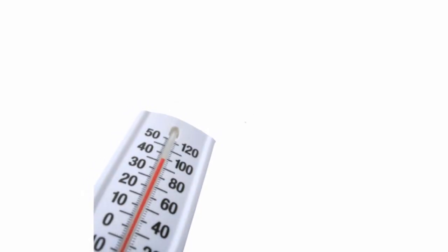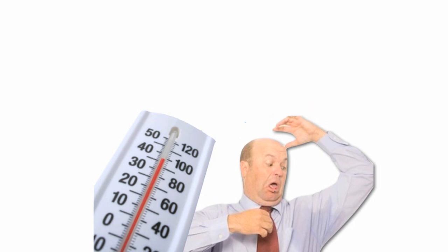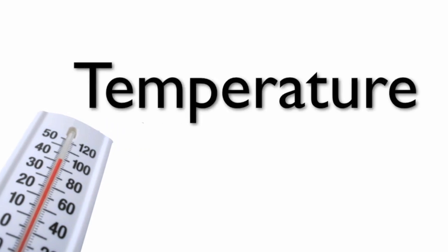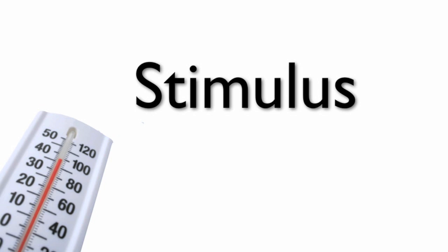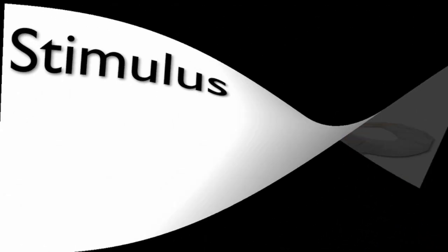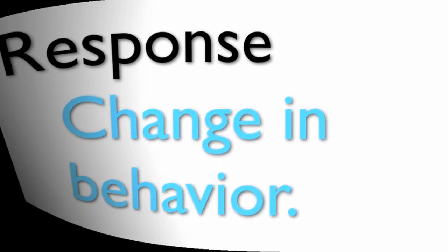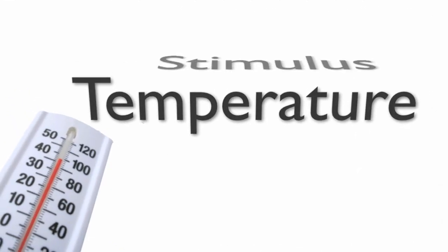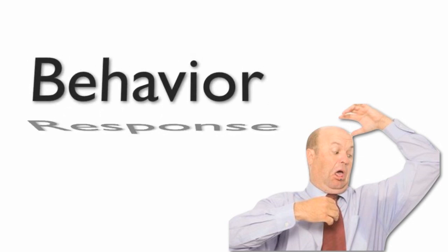On a hot day, the first thing your body does is sweat. The temperature caused our body to sweat. In this example, the temperature is known as the stimulus — a stimulus is just a change in our surroundings. Our response is a change in our behavior. So the temperature was the stimulus, and sweating was the response.